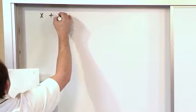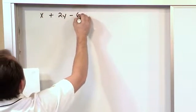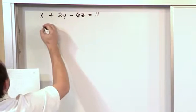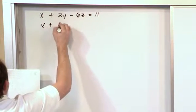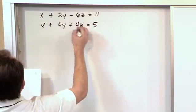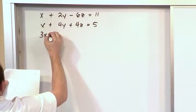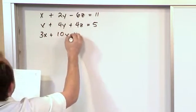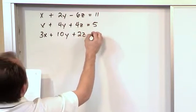x plus 2y minus 6 times z is equal to 11. x plus 4y plus 4z is equal to 5. And then 3x plus 10y plus 2z is equal to 21.